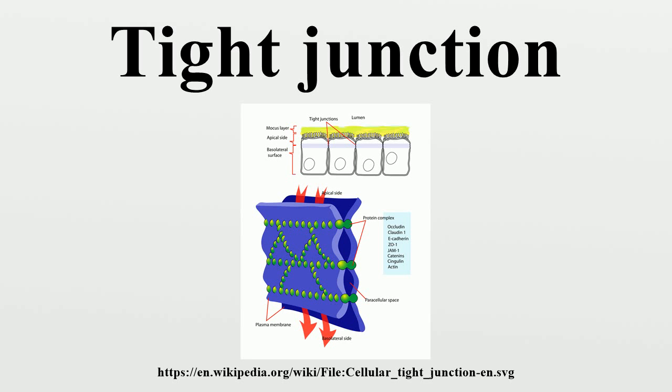Tight junctions help to maintain the polarity of cells by preventing the lateral diffusion of integral membrane proteins between the apical and lateral-basal surfaces, allowing the specialized functions of each surface to be preserved. This aims to preserve the transcellular transport.